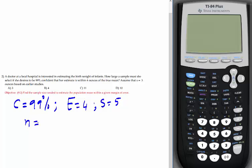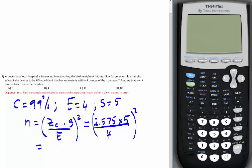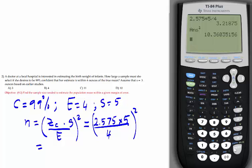Here's the formula: n equals Zc times s divided by E, then squared. Zc is 2.575, the critical value at the 99% level. s is 5, margin of error is 4. Let's do the calculator: 2.575 times 5 divided by 4, then square it.